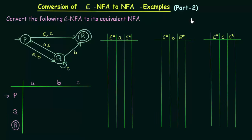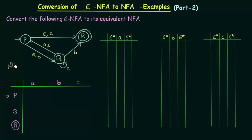In this lecture we will be seeing another example of conversion of Epsilon NFA to NFA. We have our question given here: convert the following Epsilon NFA to its equivalent NFA. We have an Epsilon NFA given here. Epsilon symbols are used and there are three states: P, Q and R, where P is the starting state and R is the final state. There are also three input symbols: A, B and C.